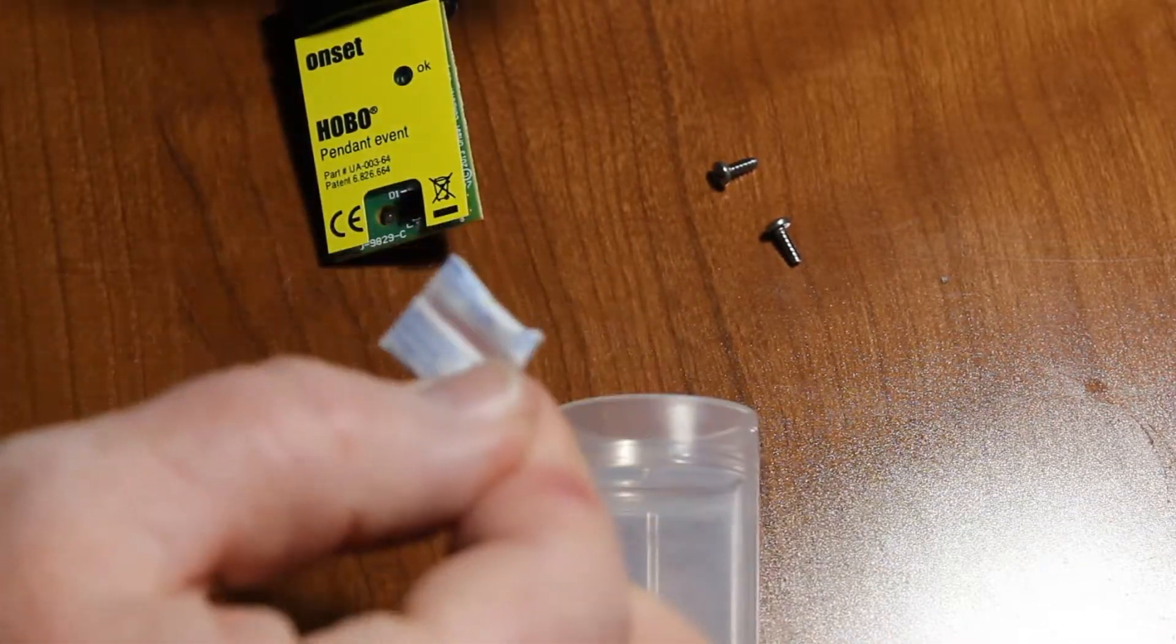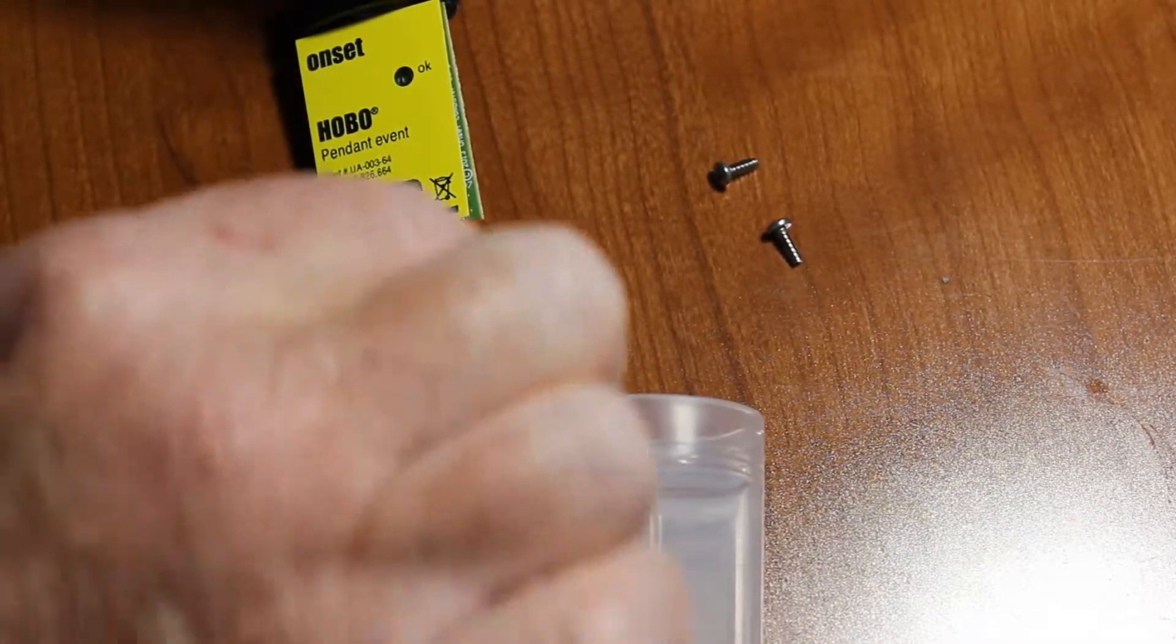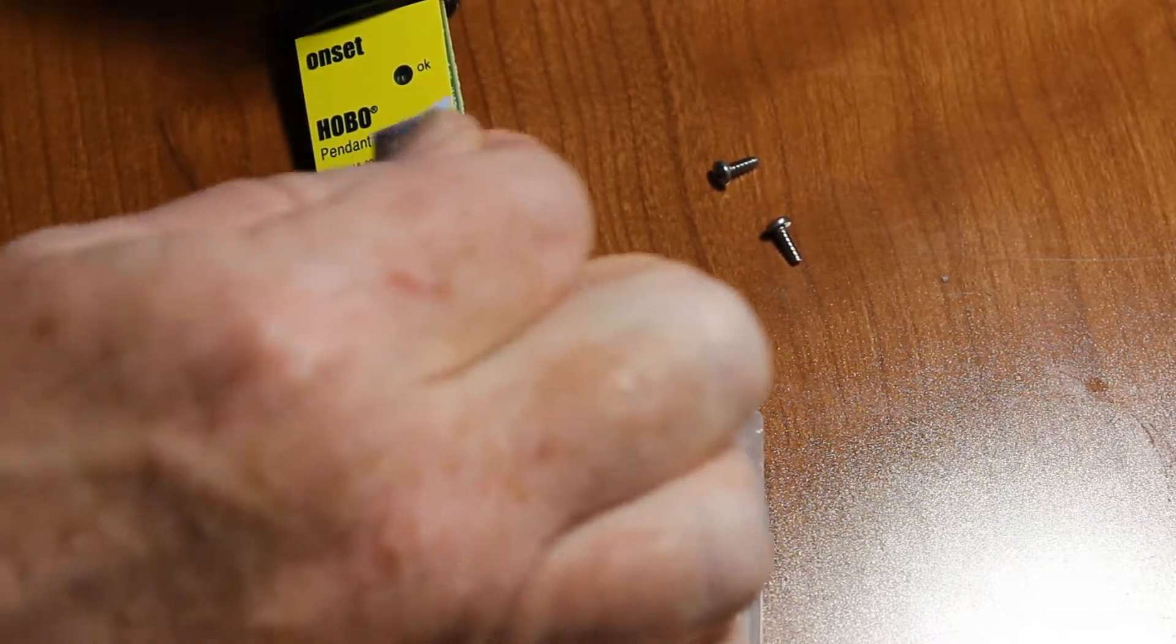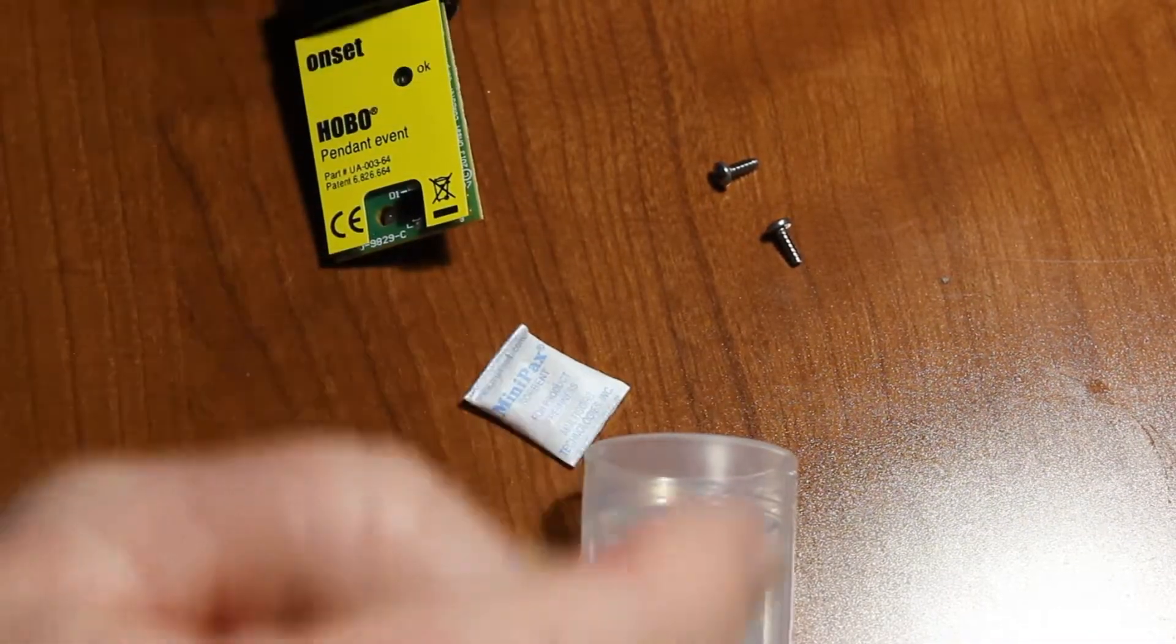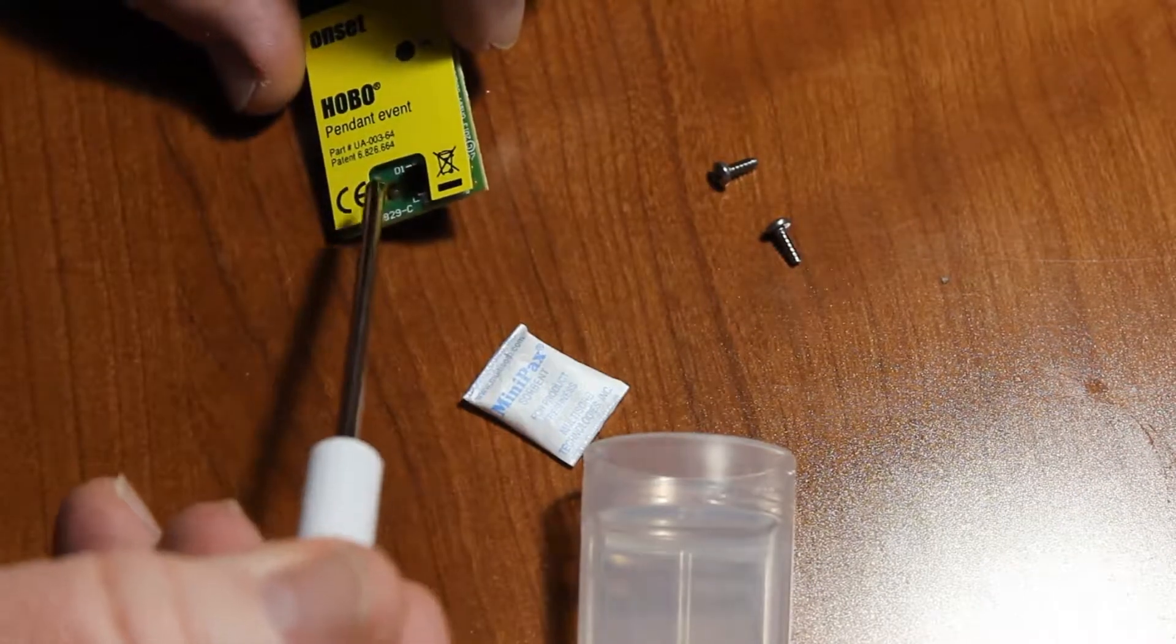Just pull this out so that it unseats from the O-ring and just slide the device out like so. This one, the desiccant pack slides in alongside the logger. You want to make sure that desiccant pack is in the back of the logger, not in the front, again, because of our infrared LEDs here.